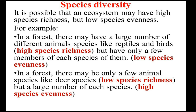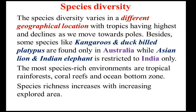In a forest, there may be only a few animal species like deer — low species richness — but large numbers of each species — high species evenness. Species diversity varies in different geographical locations, with tropics having the highest diversity, which declines as we move towards the poles. Some species like kangaroos and duck-billed platypus are found only in Australia, while Asian lion and Indian elephant are restricted to India. The most species-rich environments are tropical rainforests, coral reefs, and ocean bottom zones.